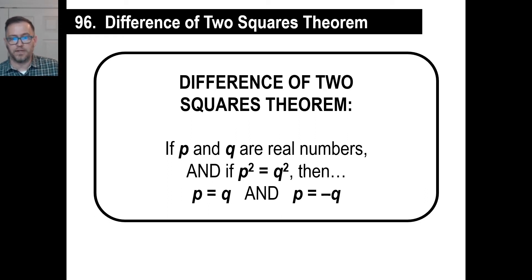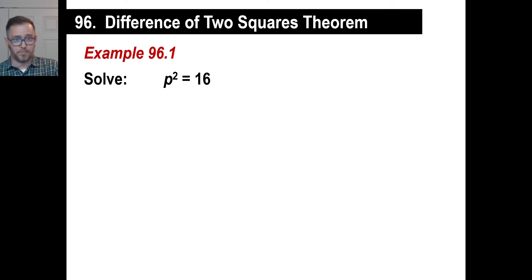If p and q are real numbers, and if p squared is q squared, then p is equal to q, and p is equal to negative q. Now, in a nutshell, this is what this means. When you have p squared is equal to 16, you're trying to find what numbers, if you square them would give you 16.